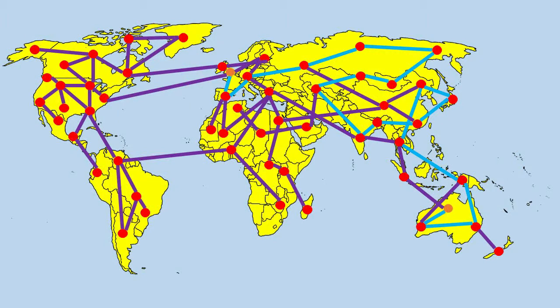If I wanted to send an email between the UK and Australia, then my email would be split up into separate packets. Each of those packets could travel along different routes to get to its final destination. Once it's at its final destination, it would be reconfigured back into the original email.